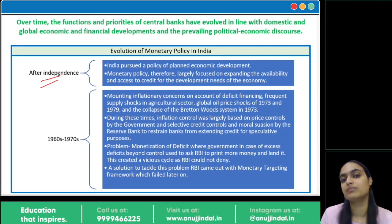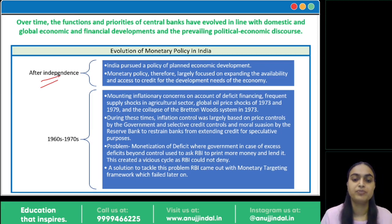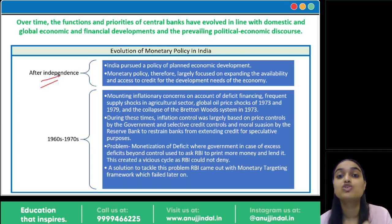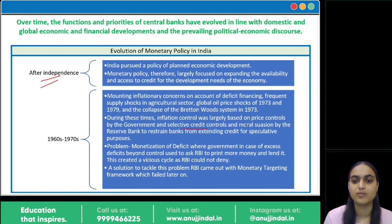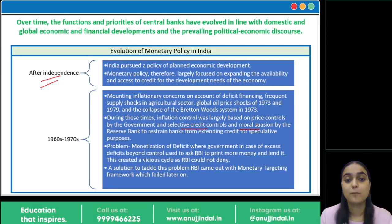With supply shocks, price shocks, and rising inflation, RBI's monetary policy ideology focused on controlling credit in the economy. Selective credit controls and moral suasion were imposed. Through moral suasion, RBI exercises control over banks — where they can lend and how much. RBI restricted the supply of credit for speculative purposes. Price control was necessary, which is why credit controls were imposed.